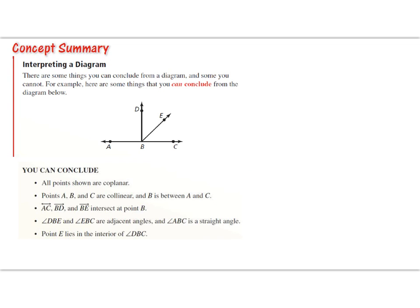There's an important concept summary about interpreting diagrams. Some things you can conclude just from looking at a diagram: all shown points are coplanar; points A, B, and C are collinear; B is between A and C; line AC, ray BD, and ray BE intersect at point B; angle DBE and angle EBC are adjacent angles; angle ABC is a straight angle; and point E lies in the interior of angle DBC.